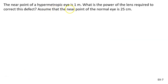The near point of the hypermetric eye is 1 meter. The person cannot see less than 1 meter, or 100 centimeter distance. What is the power of the lens required to correct this defect? Assume that the near point of the normal eye is 25 centimeter.